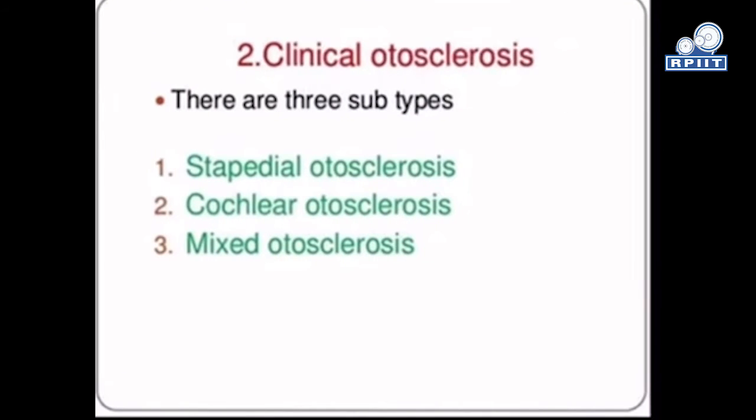The second type is clinical otosclerosis, which has three subtypes: stapedial otosclerosis, cochlear otosclerosis, and mixed otosclerosis. In stapedial otosclerosis, the focus may produce otolysis of the membranous labyrinth. In cochlear otosclerosis, the process causes impact upon the membranous labyrinth, producing sensorineural deafness. In mixed otosclerosis, both fixation of the stapes and involvement of the labyrinth result in mixed hearing loss.